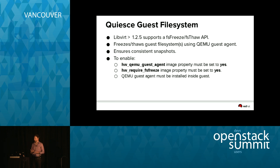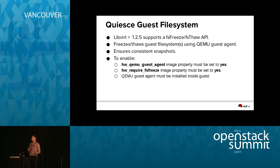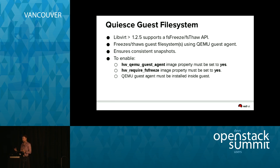To enable this: when a guest image has the guest agent installed, you need to set the 'hw_qemu_guest_agent=yes' image property so Nova knows it's there, since Nova doesn't yet have much introspection inside the guest beyond what these agents provide. For guests where you want to use this capability, set the 'os_require_quiesce=yes' image property. If these things are set up, the freeze/thaw will be implicitly handled for you during snapshotting — it's primarily a guest image creation and setup step.